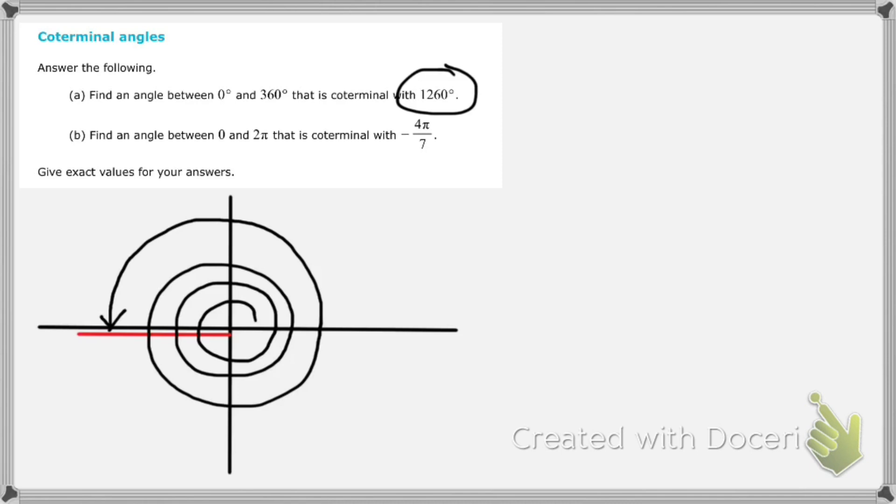Now what we're being asked to do here is find an angle that is between 0 and 360 degrees that is coterminal. This is where the angle ends up, the terminal side of the angle. So coterminal means they end up in the same place. I want an angle that's between 0 and 360 degrees that ends up in the same place as this 1260 degree angle.